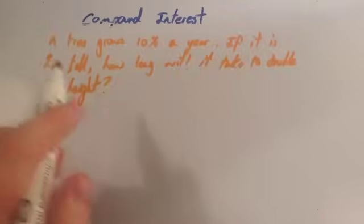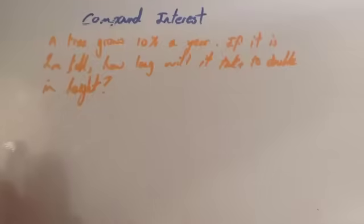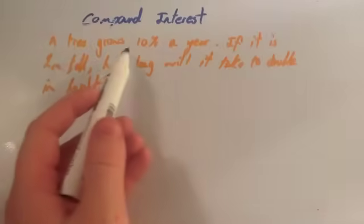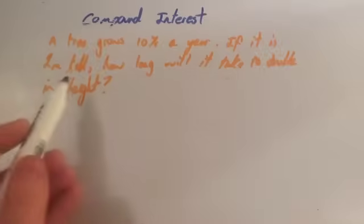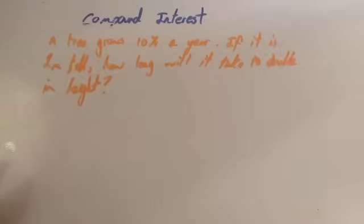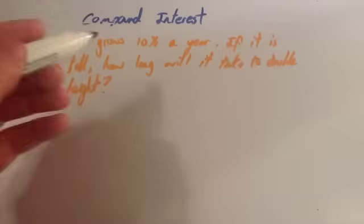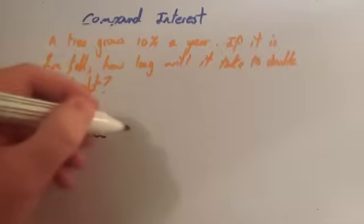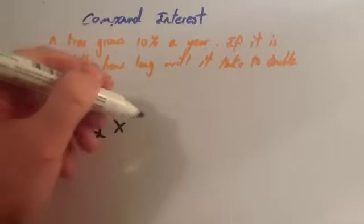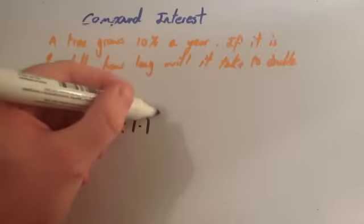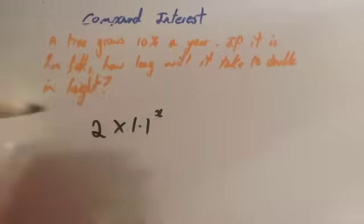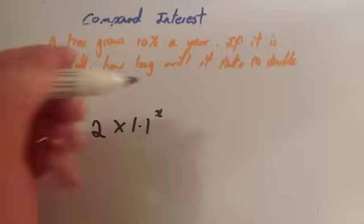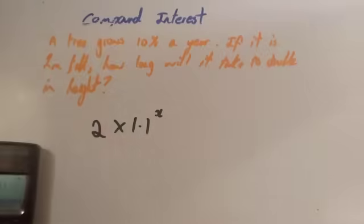We're now going to look at another compound interest question. This is a very different type of question that you could be asked. We've now got a trial improvement type of question. It says a tree grows 10% a year. If it is 2 metres tall, how long will it take to double in height? In other words, how long will it take to become 4 metres tall? Remember, it's initial multiplied by the multiplier to the power of time. The initial is 2 metres multiplied by the multiplier. It's a 10% increase, so that would be 1.1 to the power of time, x. What we want to do is see how many years it will take to get over 4 metres. Let's try some numbers.